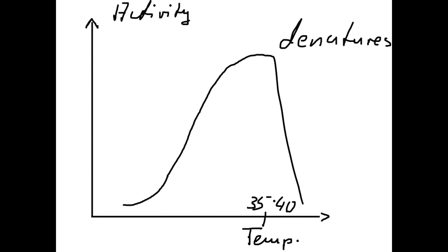This curve is for a typical mesophilic organism. 'Mesophilic' means the organism grows very well at medium temperatures, in the range of 35 to 40 degrees.